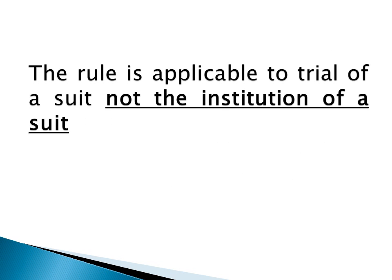The rule of Res Sub Judici is applicable to the trial of a suit and not to the institution of a suit. The court has no power to bar the institution of a subsequent suit but can restrict its trial only. Section 10 is very explicit and starts with the words 'no court shall proceed with the trial of any suit,' conclusively determining that it shall only apply to the trial and not to other relevant proceedings.